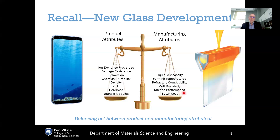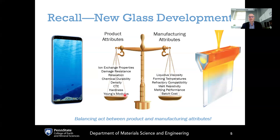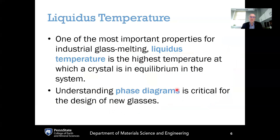We also need to make sure we get good quality melts, minimizing defects like gaseous bubbles and solid defects, and ensuring complete melting and homogenization of the molten glass. Cost is always important in industrial manufacturing — we must manufacture at both high enough quality and low enough cost for commercial success. And if you change the composition of the glass, it's not just one property that changes on its own, but all of the properties change simultaneously. So we need to consider all of these properties when designing new glasses, both product-facing and manufacturing-related attributes.